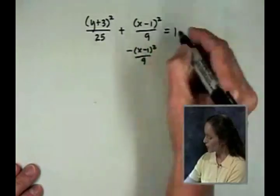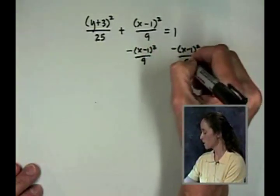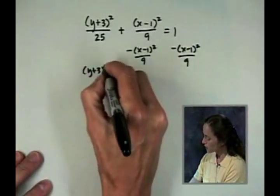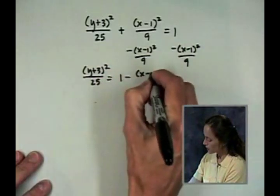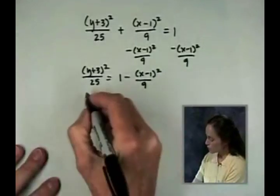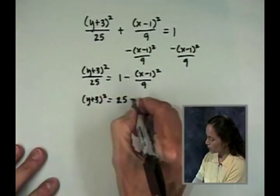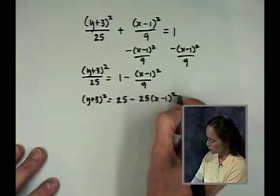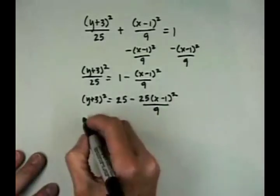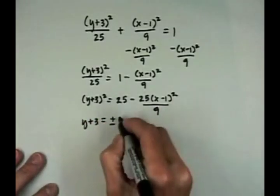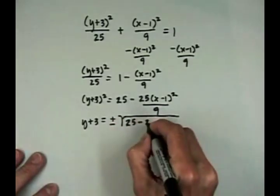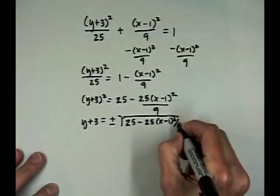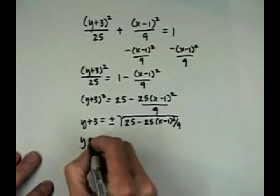We want to check this work using a graphing calculator. We need to take the original equation and solve for y. First, subtract the (x minus 1) squared over 9 term from both sides. That leaves (y plus 3) squared over 25 equals 1 minus (x minus 1) squared over 9. Multiply by 25, then take the square root of both sides, introducing a plus or minus. Finally, subtract 3.